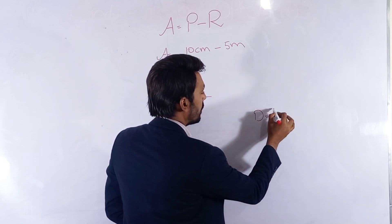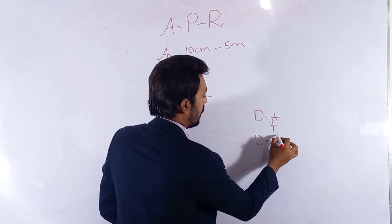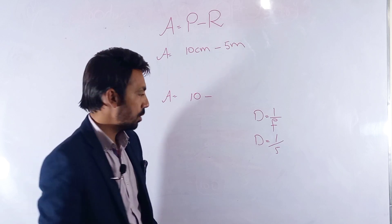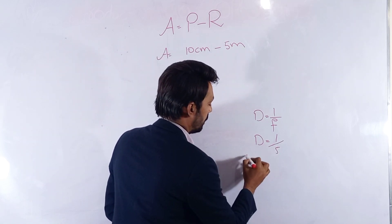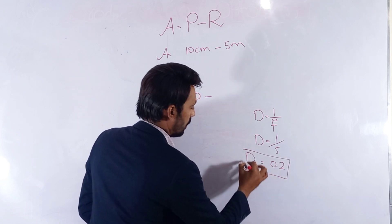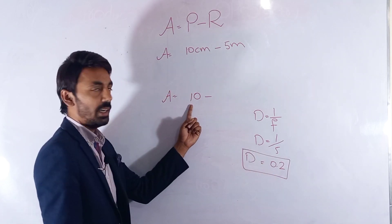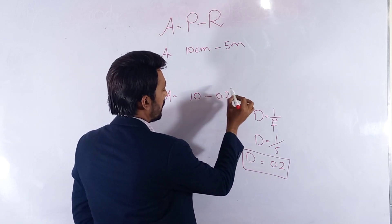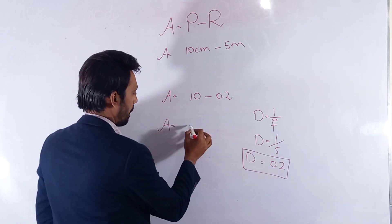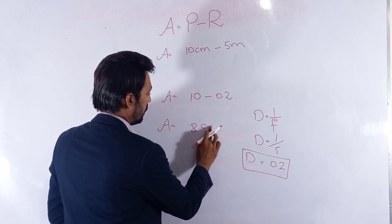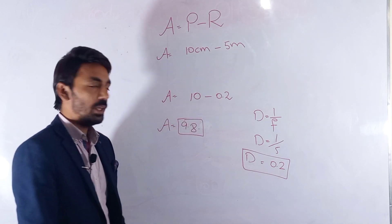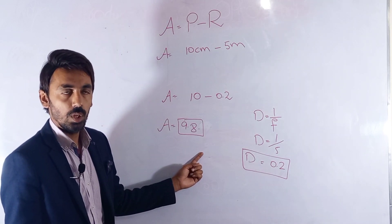The far point is 5 meters, and using the same formula D equals 1 over f, we get 1 over 5, which equals 0.2 diopters. Now putting the values into the formula — near point is 10 diopters and far point is 0.2 diopters — the amplitude of accommodation is 10 minus 0.2, which equals 9.8 diopters.